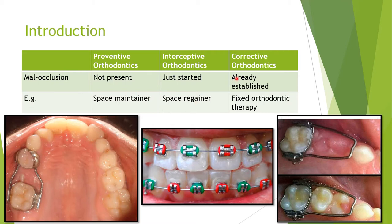In corrective orthodontics, if a tooth is completely out of alignment and the malocclusion is fully established — no longer developing — we cannot use interceptive measures. We must go for fixed orthodontic therapy, commonly referred to as braces, or even orthodontic surgery. It is very important to differentiate between these three domains so we know what we are doing when treating the child.